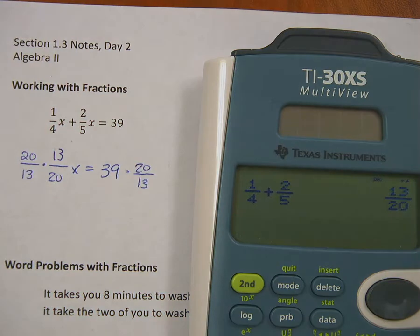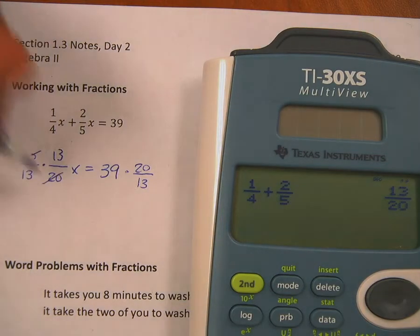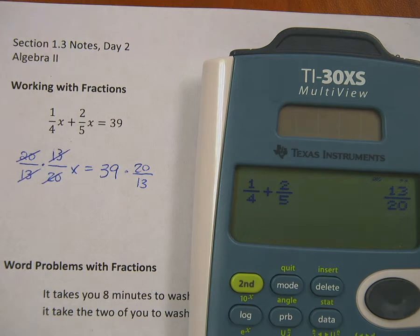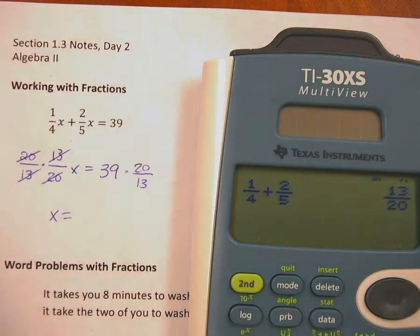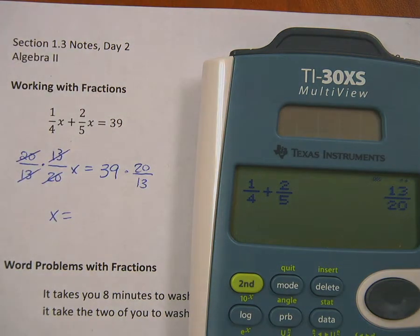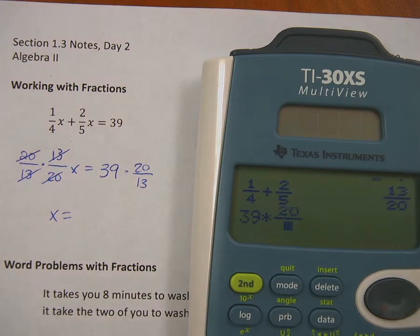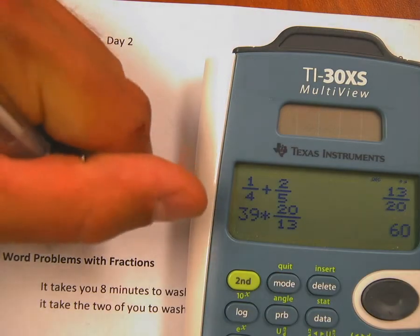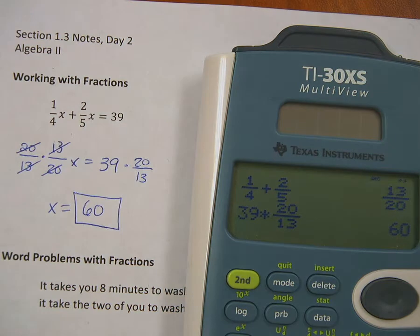The reason that I chose that value, the fraction in front of the x I took it and flipped it, is because now the 20 on top and the 20 on bottom go away, the 13 on top and the 13 on bottom go away, so I'm left with just an x. I'm going to take the 39 and multiply by 20/13, which is the same thing as times 20 and divided by 13, and I get a total of 60 for x. That's one way to do the problem.